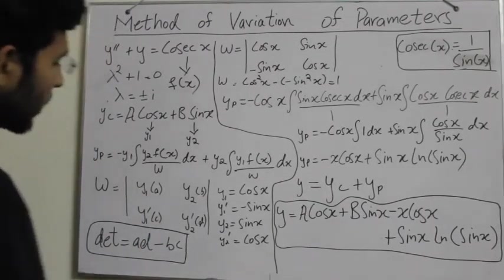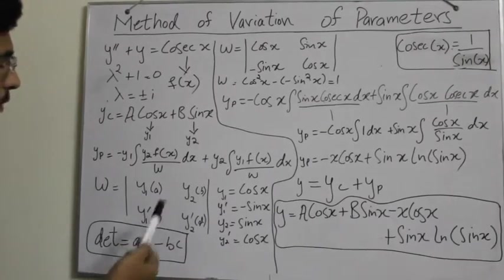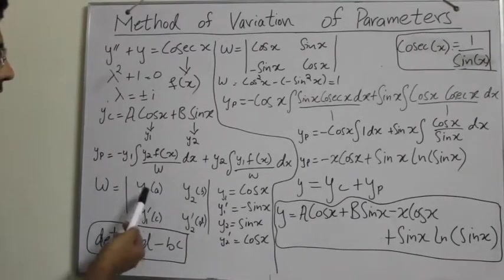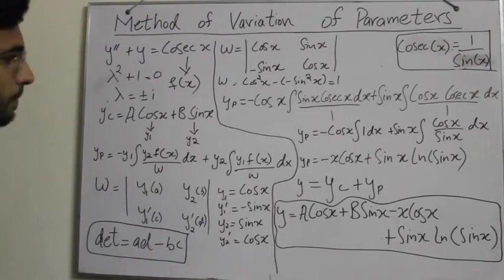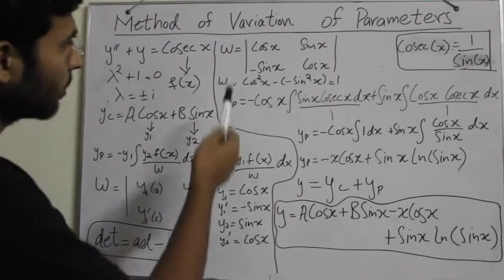Now pretty easy. It is the same as the determinant of a 2 by 2 matrix, which is ad minus bc, assuming that this is a, b, and this is c, d. So we find out omega.